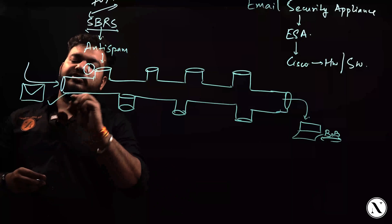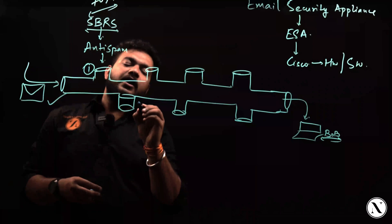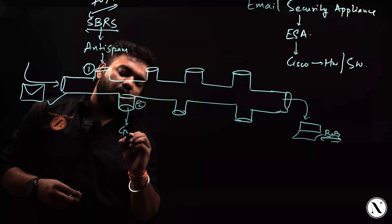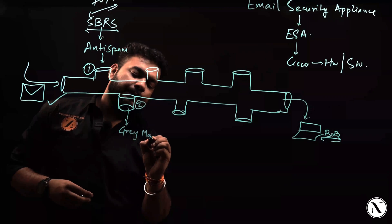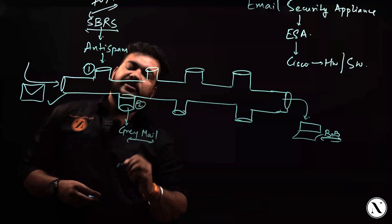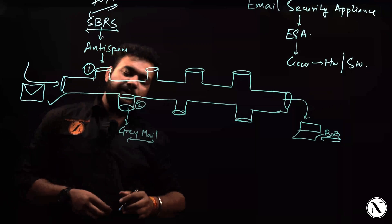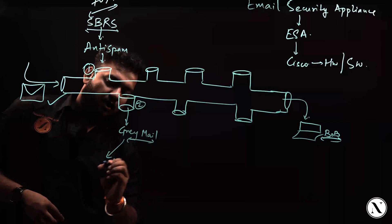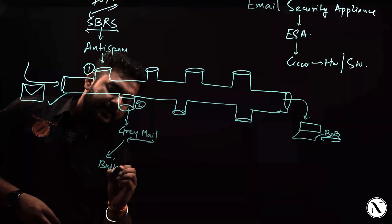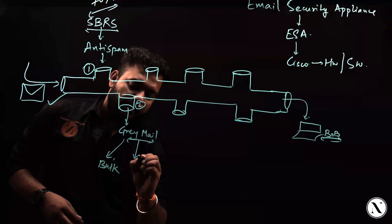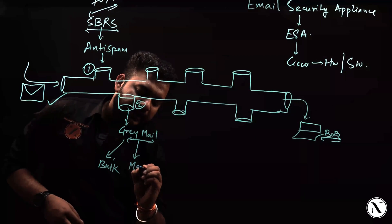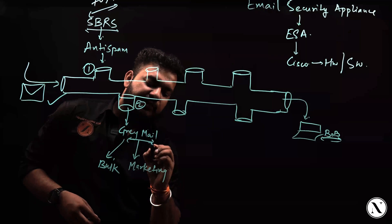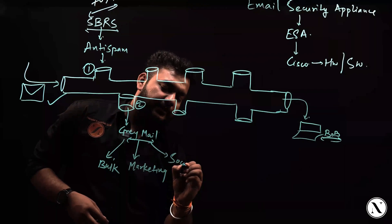If the email has crossed the first barrier, second, it will be received by a detection called grey mail. Grey mail is a service proposed by Cisco Email Security Appliance which does the filtering of bulk-related emails, marketing-related emails, and also social media emails.